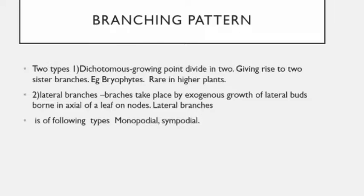In monopodial branching, growth is continued only by the terminal bud. The main trunk is not branched; the main trunk continues its growth by the terminal bud, and axillary buds grow as lateral branches in acropetal succession — older towards the base and younger at the apex — giving the plant a typical cone-like appearance. Examples are conifers such as pine, spruce, Ashoka, eucalyptus, and Fumaria.